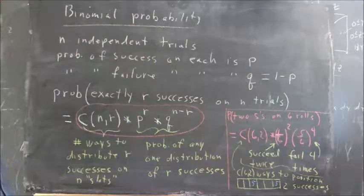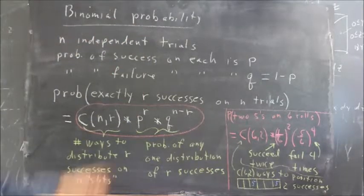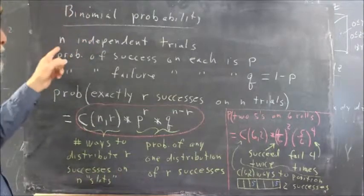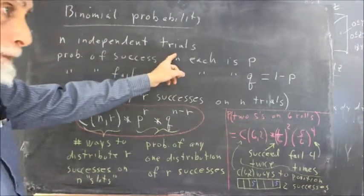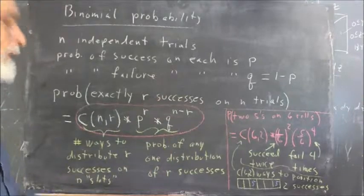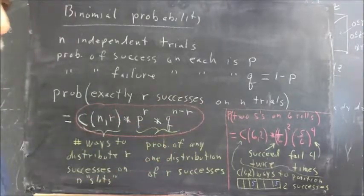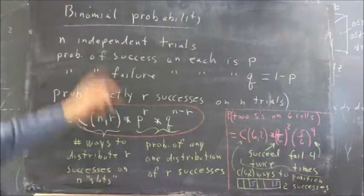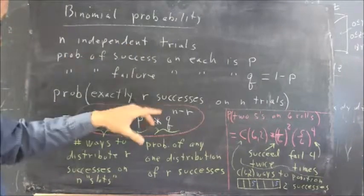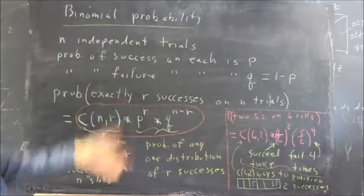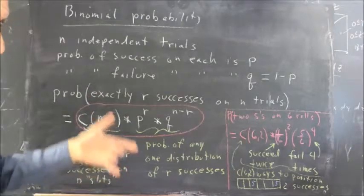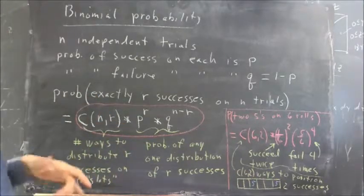Binomial probability is what happens when you have a number of independent trials. In the cases we saw, we've rolled a die two times, or three times, or twenty times. Those were independent trials, and I could come up any way on any of the trials not influenced by what happened with any of the others.